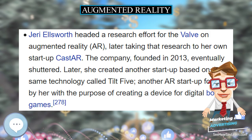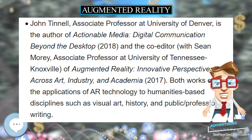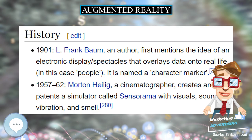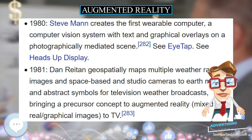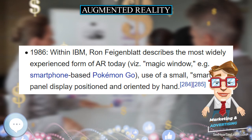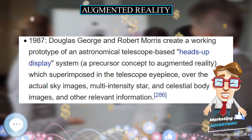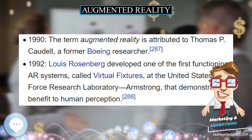The key difference in SAR is that the display is separated from the users of the system. Since the displays are not associated with each user, SAR scales naturally up to groups of users, allowing for collocated collaboration. Examples include shader lamps, mobile projectors, virtual tables, and smart projectors. Shader lamps mimic and augment reality by projecting imagery onto neutral objects, providing the opportunity to enhance the object's appearance with materials of a simple unit — a projector, camera, and sensor. Other applications include table and wall projections.